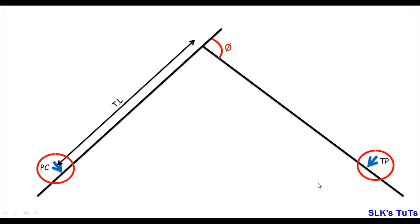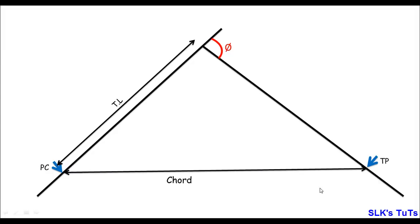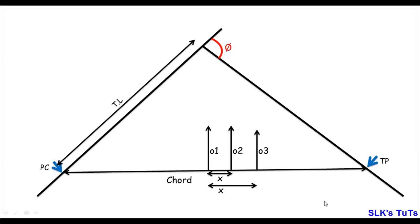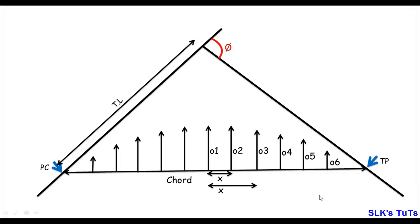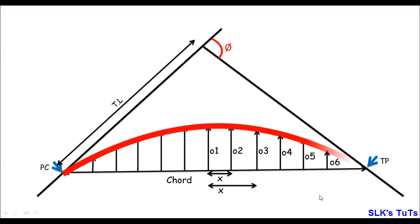When we get the positions of PC and TP, we join these both points, which is known as the chord of the curve. Then we take perpendicular offsets from this chord, which are known as ordinates. That is why this method is known as the ordinate method. These offsets are taken perpendicularly and the distance between two offsets is taken equal.